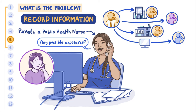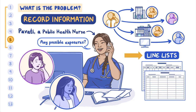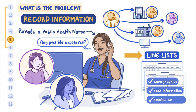Exposures are things that could have caused the infection. Pivati may also interview people who were not sick to compare exposures for later analysis, and to help find associations. The team would collect and organize this data into a line list. Line lists help organize information about infected persons, like demographics, case information, and possible exposures.